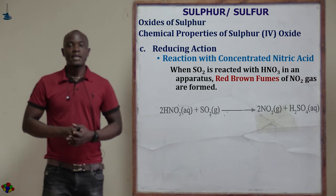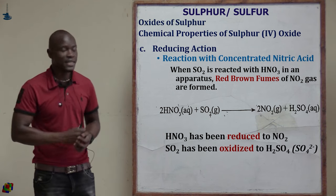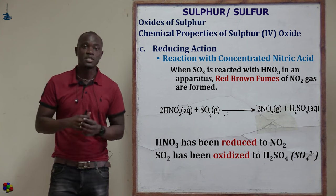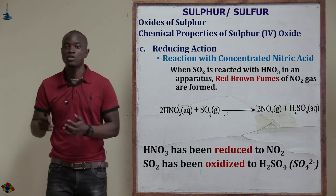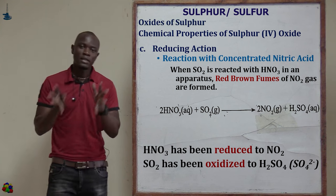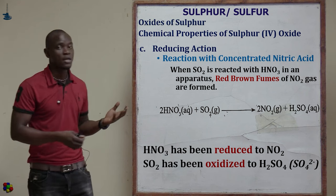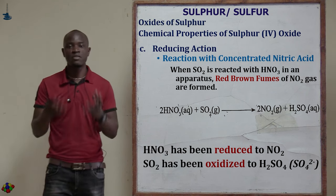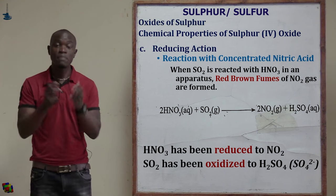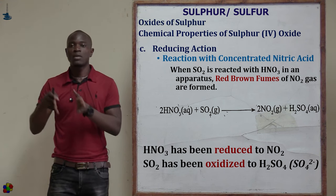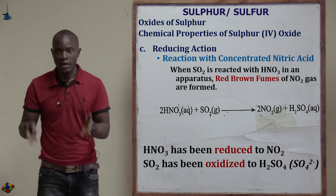The next reducing property is reaction with concentrated nitric acid. When sulfur(IV) oxide is bubbled through concentrated nitric acid, brown fumes of nitrogen(IV) oxide are formed. Sulfur(IV) oxide reduces nitric acid to nitrogen(IV) oxide and itself is oxidized from sulfur(IV) to sulfate ions, forming sulfuric acid (H2SO4).